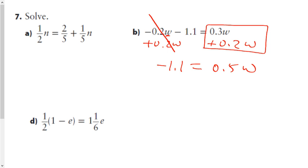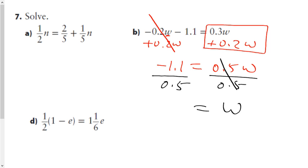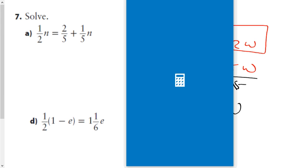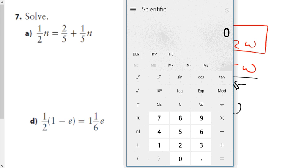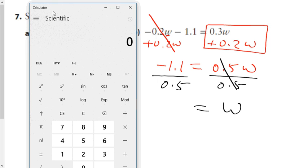Combining the 0.3 coefficient and the 0.2 coefficient gives me 0.5w. By adding 0.2w to both sides I end up with a much simpler equation. Now I divide both sides by the coefficient: thinking of it as $1.10 divided into piles of 50 cents gives two piles. So 1.1 divided by 0.5 equals 2.2, and w equals 2.2.